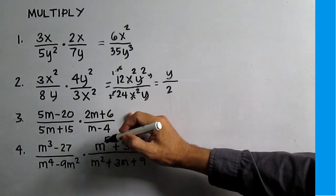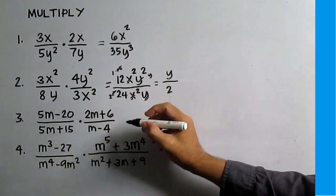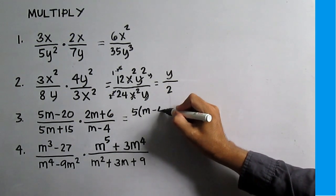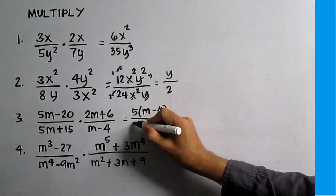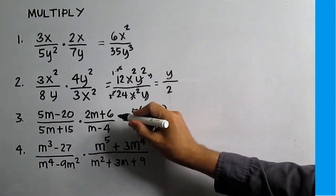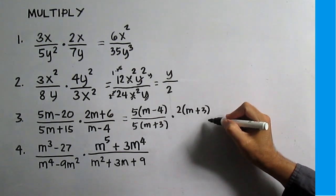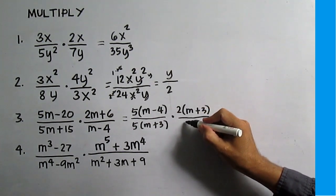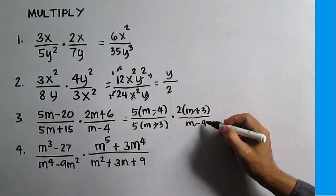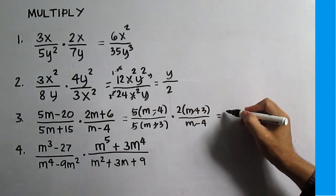Number 3 is easier if you simplify first by factoring, then divide out common factors. Factor 5m minus 20: the common monomial factor is 5, giving 5(m minus 4). Factor 5m plus 15: the common factor is 5, giving 5(m plus 3). Times 2m plus 6: the common factor is 2, giving 2(m plus 3). Then copy (m minus 4). Divide out common factors: (m plus 3), (m minus 4), and 5 and 5. The answer is 2 over 1, or 2.